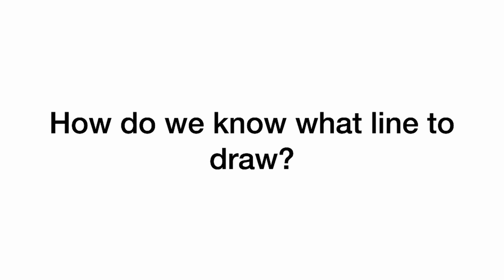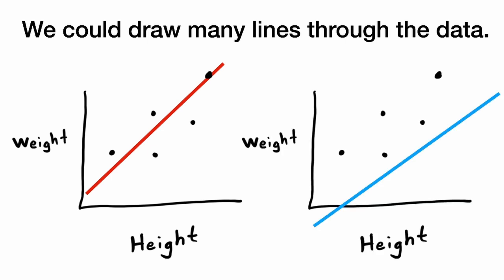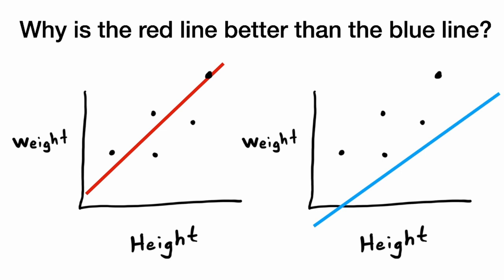But how do we know what line to draw? We could draw many lines through the data. We could draw this red line, or we could draw this blue line. Why is the red line better than the blue line?